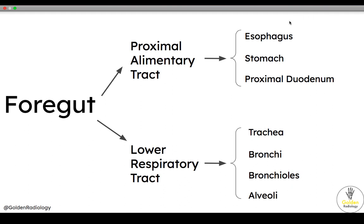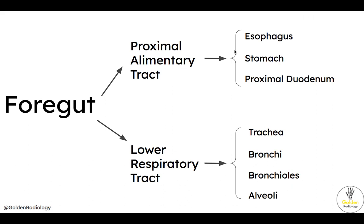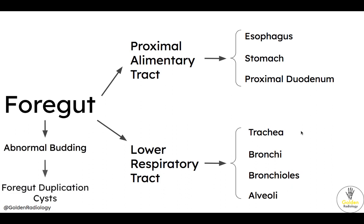As a reminder, the foregut forms both the proximal alimentary tract — essentially the GI system proximal to the ligament of Treitz, meaning the esophagus, stomach, and proximal duodenum — as well as the lower respiratory tract, meaning the trachea, bronchi, bronchioles, and alveoli. Abnormal budding of the foregut produces a foregut duplication cyst. Bronchogenic cysts are foregut duplication cysts arising from the lower respiratory tract, most commonly from the trachea and large bronchi. You can also have foregut duplication cysts arising from the alimentary tract, most commonly at the esophagus.